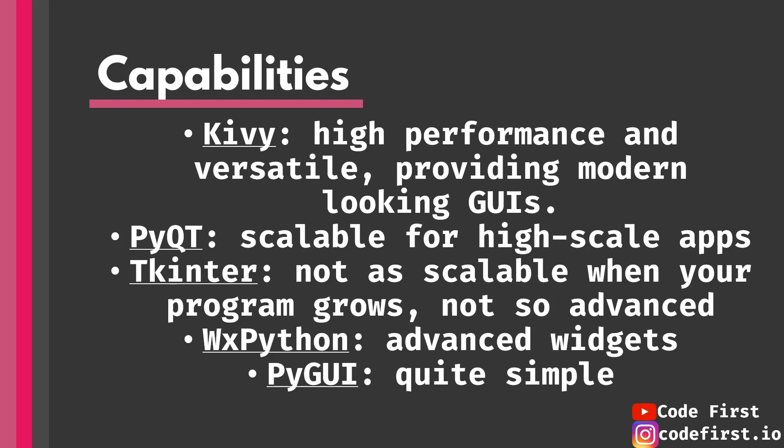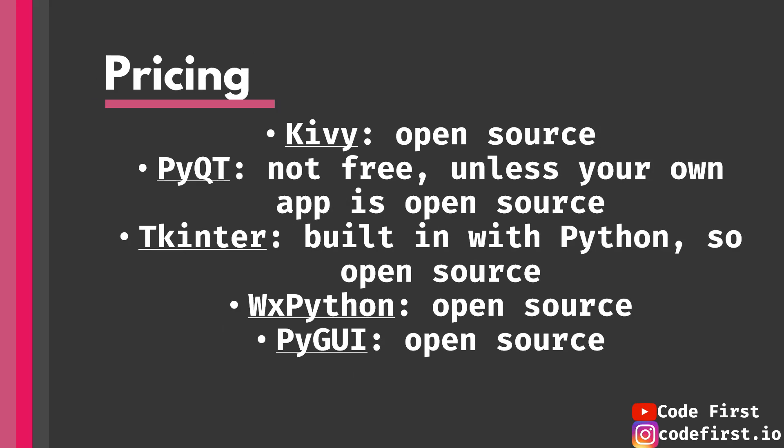For capabilities: Kivy is high-performance, versatile, and provides modern-looking GUIs. PyQt5 is scalable for high-scale apps — as your app grows, very little code changes are needed. Tkinter is not very scalable and gets messy as the program grows. WxPython has advanced widgets and handles growth reasonably well. PySimpleGUI is very simple, suited only for basic user interaction and not large advanced applications.